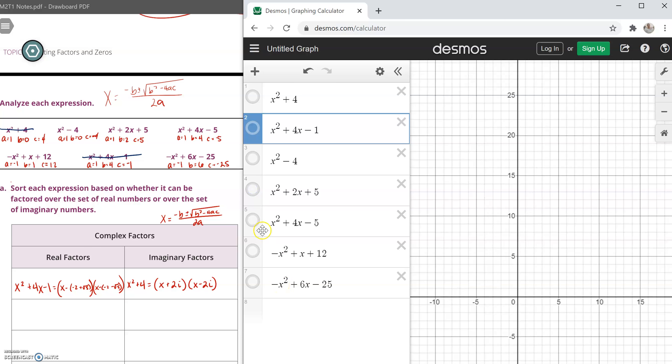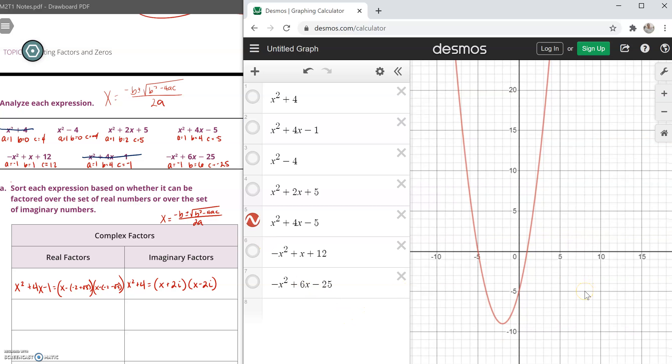Check out the next one. This graph crosses our x-axis at two points. So is this expression going to have real factors or are they going to have imaginary factors? Use the quadratic formula to find out.